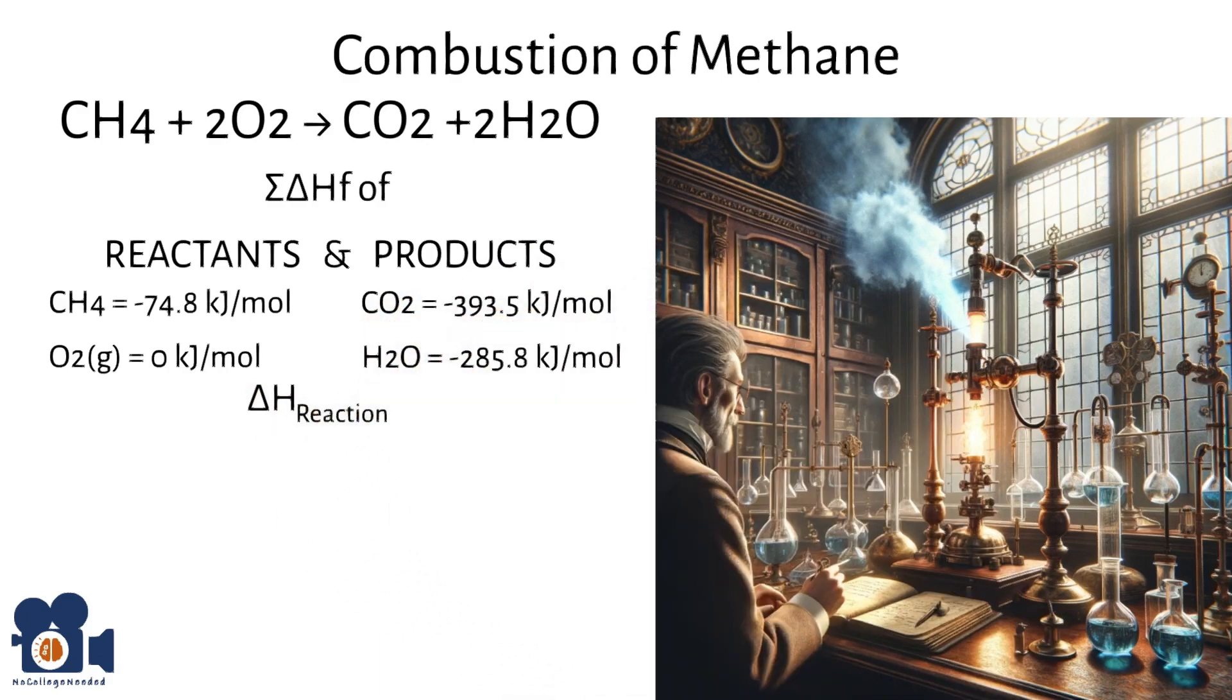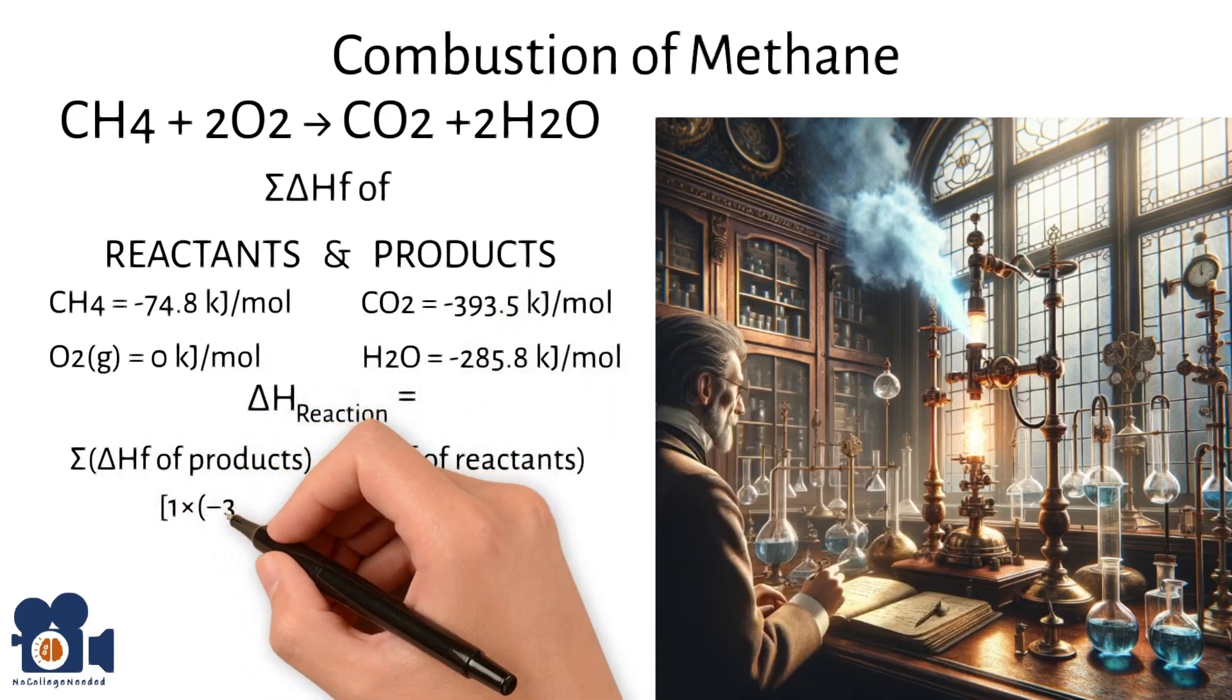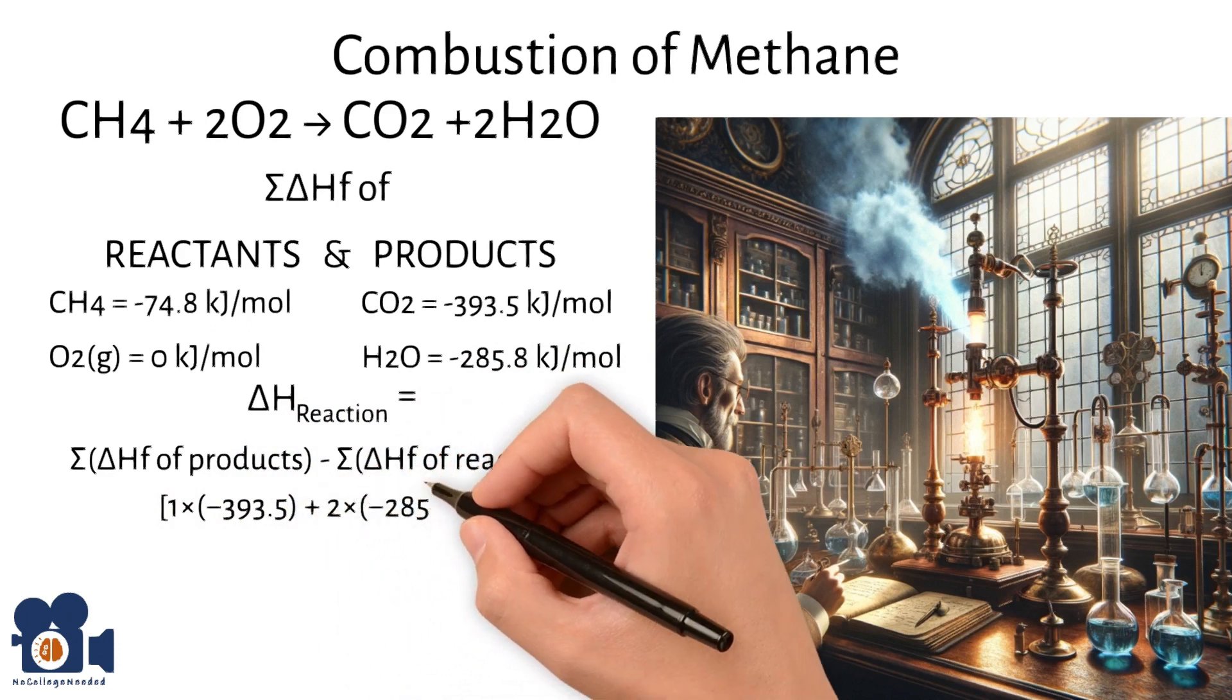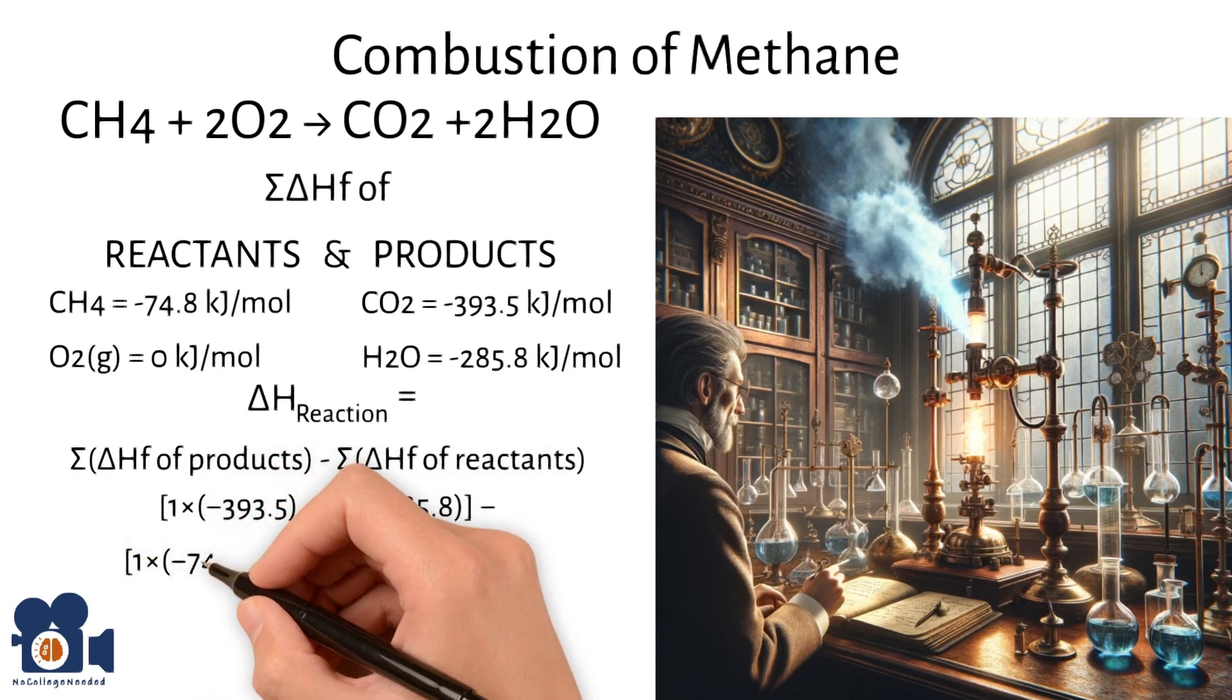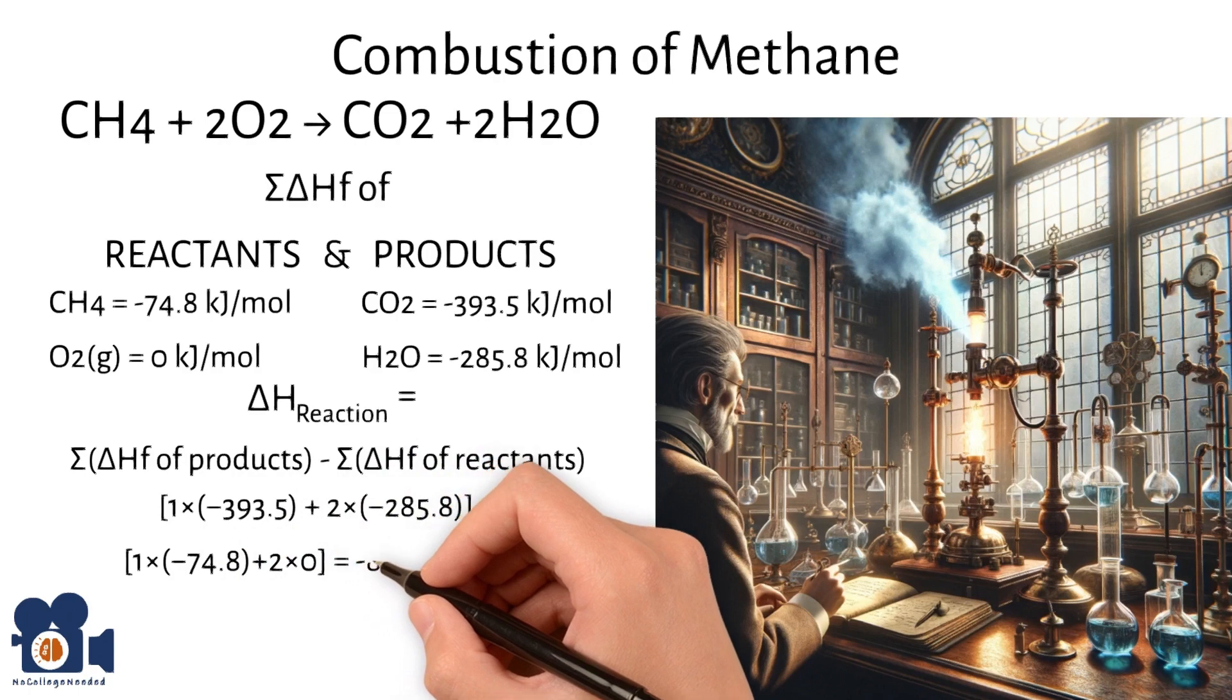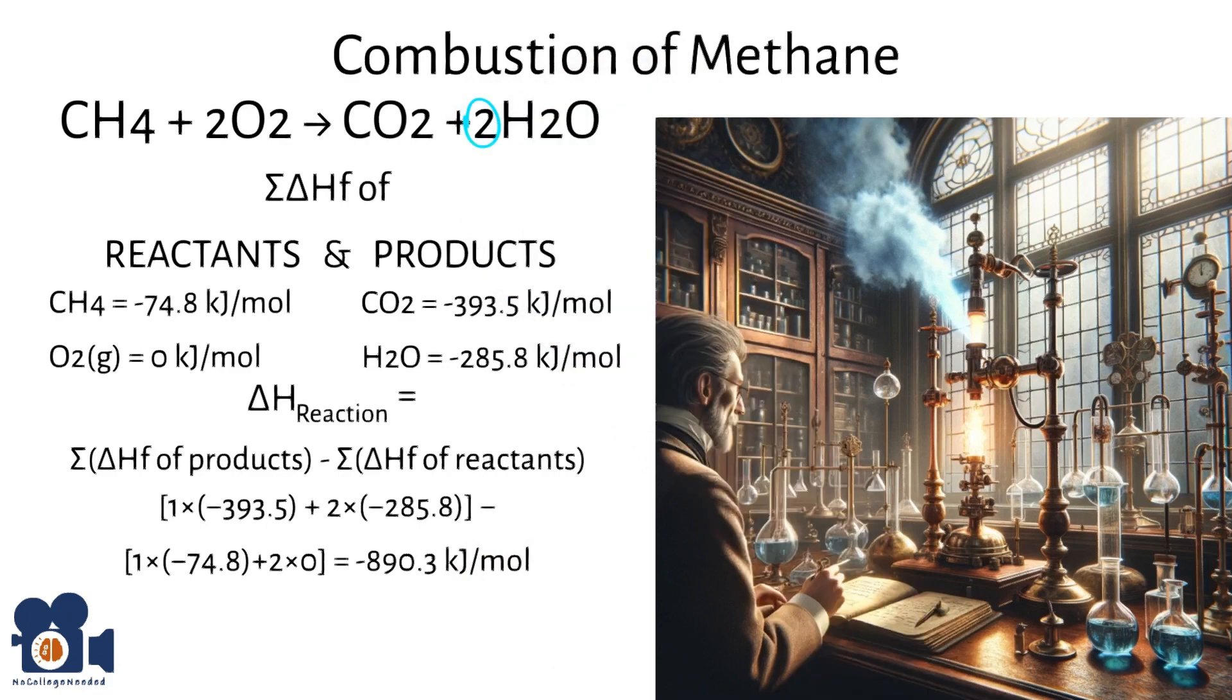Plugging these values into the equation looks like delta H reaction equals 1 times negative 393.5 plus 2 times negative 285.8 minus 1 times negative 74.8 plus 2 times zero equals negative 890.3 kilojoules per mole.